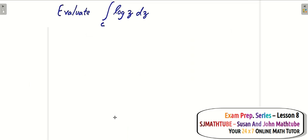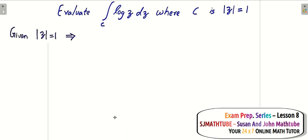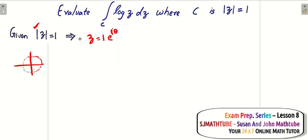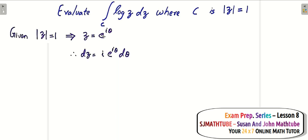Another question: evaluate the integral over C of log(z) dz, where C is the circle with radius 1 unit. As discussed, |z| = 1 implies z = 1·e^(iθ). This z represents all points whose distance from the origin equals 1, giving a circle. Every point on the circle is of the form cos θ + i sin θ. Taking the differential, dz = e^(iθ)·i dθ. Since this is a full circle, θ varies from 0 to 2π.